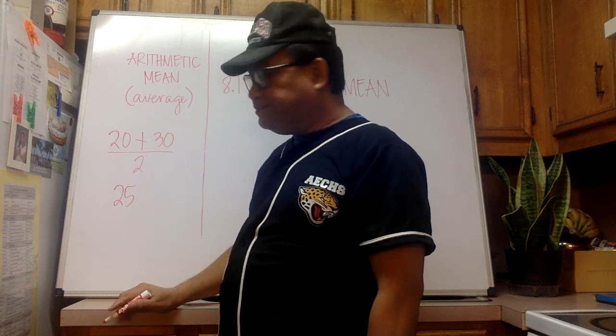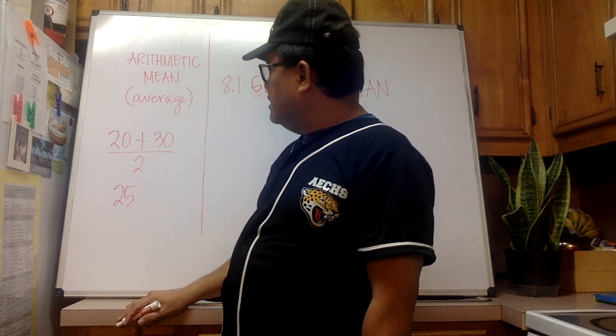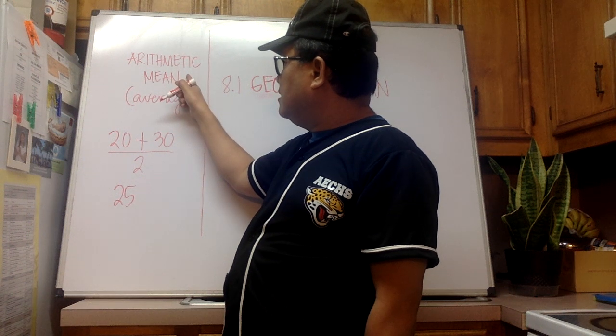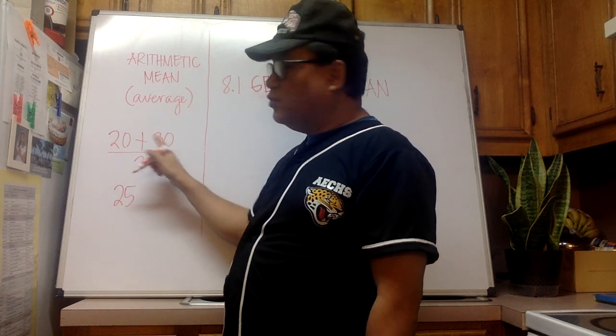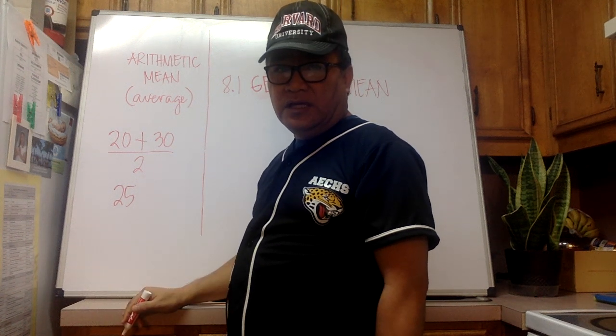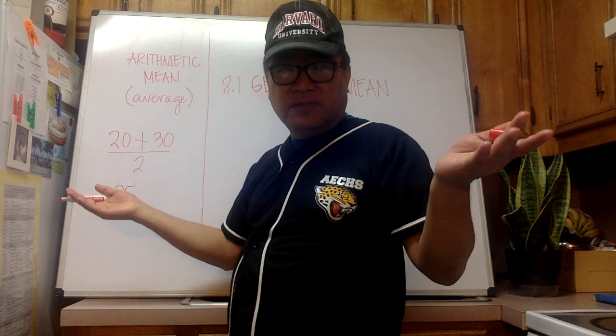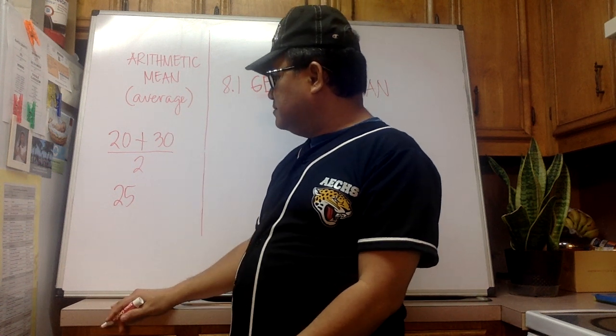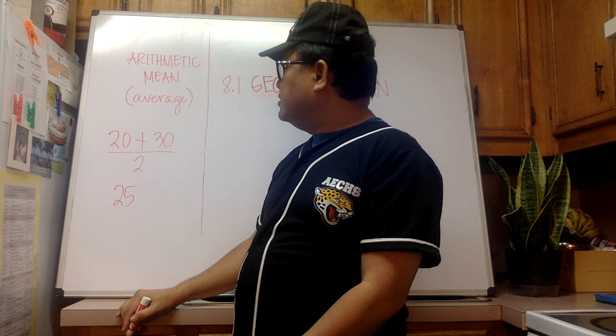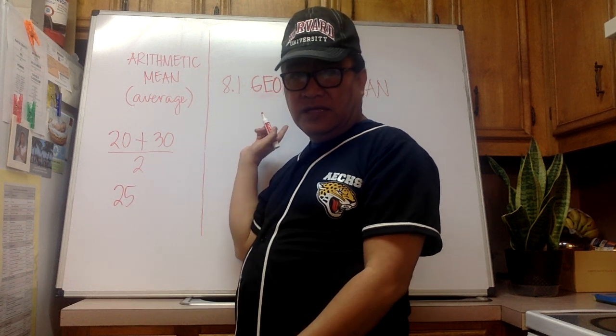So what is 25? 25 is the arithmetic mean or average of the given numbers 20 and 30. That's the arithmetic mean. The reason why I brought this one up is because I don't want you to confuse geometric mean with arithmetic mean.